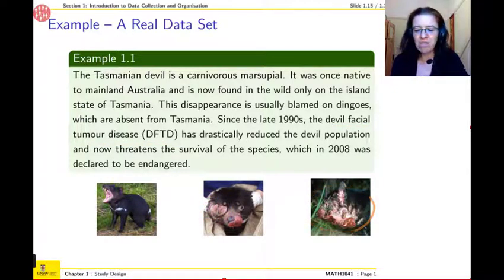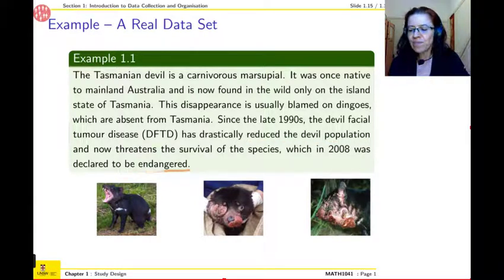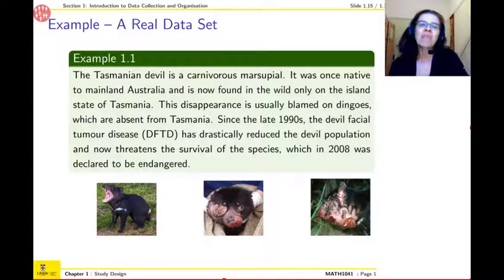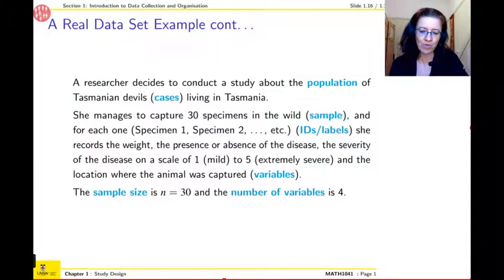Since 1990, the Tasmanian devil got this disease, which is called Devil Facial Tumor Disease. And as you can see, it's really, really bad. And this has drastically reduced the population and now it became endangered. So that's the story. And we want to use that story—I mean, it's a real story, of course—and we want to use this to learn some vocabulary. So in that case, we are interested in knowing what's happening to the whole population of Tasmanian devils. So that's the population of interest.